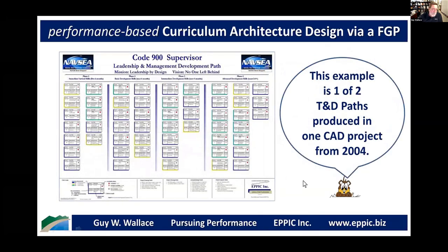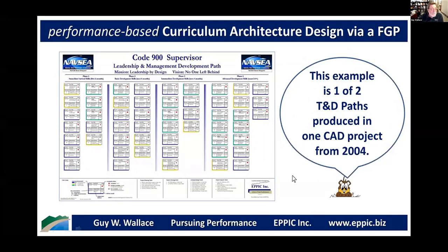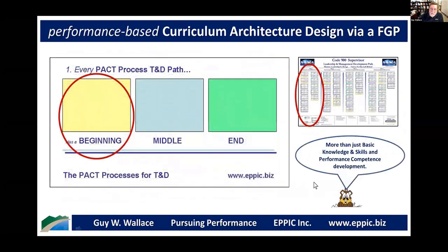This is one of two paths produced for Norfolk Naval Shipyard supervisors and zone managers in the production environment. This was a project where, when we looked at existing content, we found 27 two-hour modules on active listening. That's where money gets spent on redundant content for no good reason. You can see all the blank circles in this path — things they needed but didn't have — but they also had a lot of content they didn't need. Our goal was to build around what the taxpayers had already spent money on.